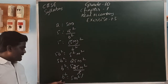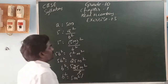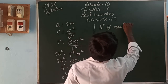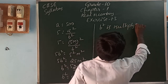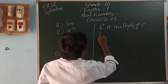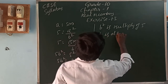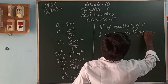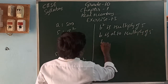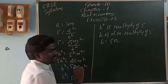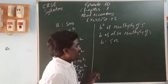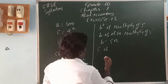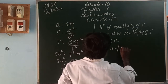Here, b squared is a multiple of 5. When b squared is a multiple of 5, then b is also a multiple of 5. So 5 is a factor of b.